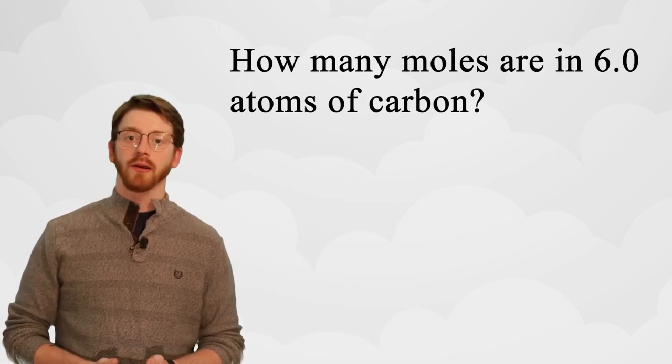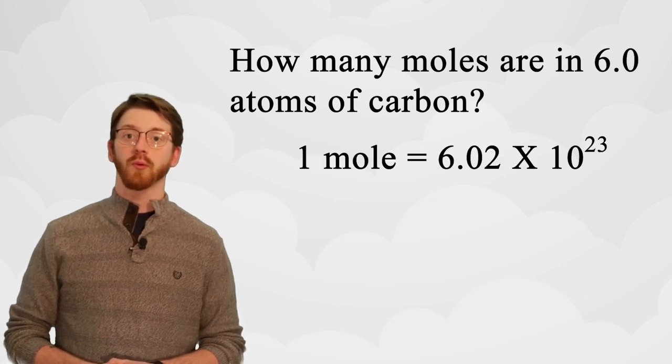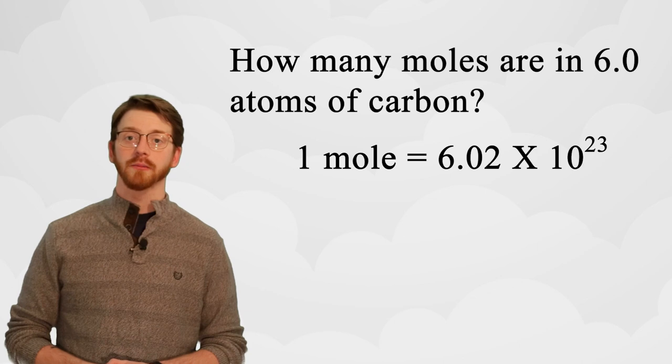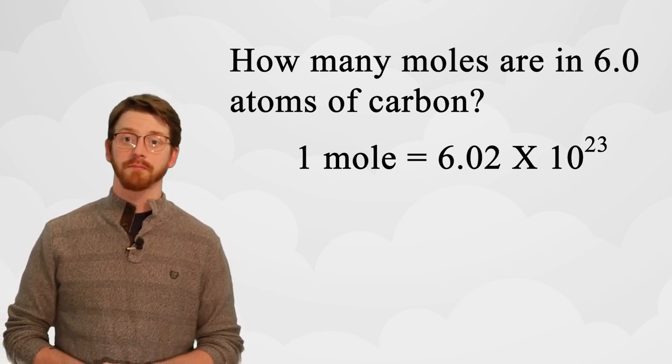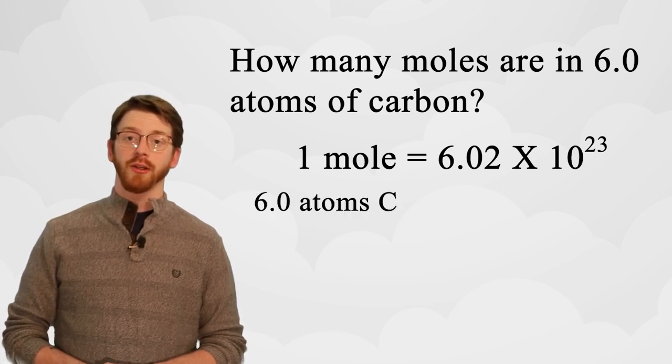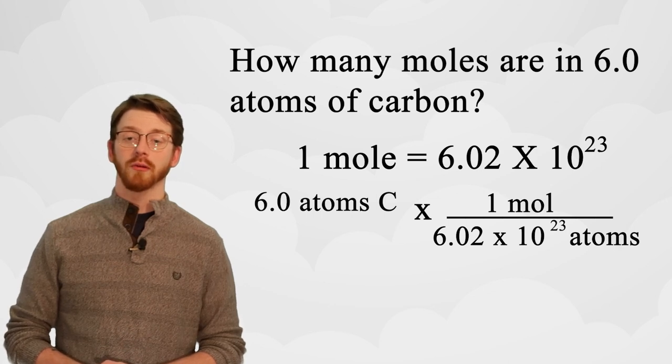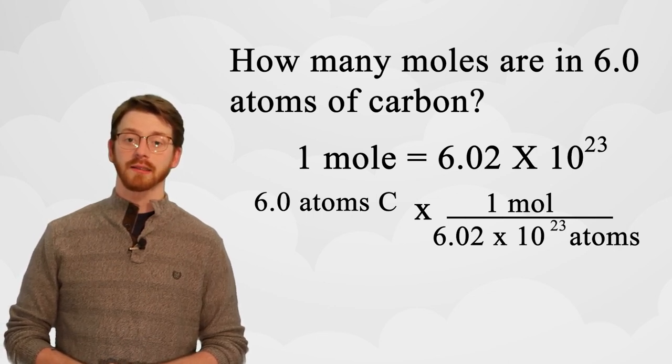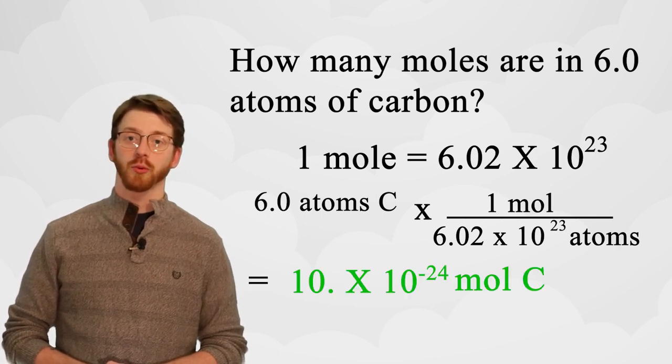Let's try a little practice. How many moles are in 6.0 atoms of carbon? Here we know that one mole is equal to 6.02 times 10 to the 23rd atoms. We can basically use this as a conversion factor for our 6 atoms. If we start with the 6.0 atoms that the problem gives us, using dimensional analysis, we know that there are 6.02 times 10 to the 23rd atoms in one mole. All we have to do is divide 6 by Avogadro's number, and we get 10 times 10 to the negative 24th.